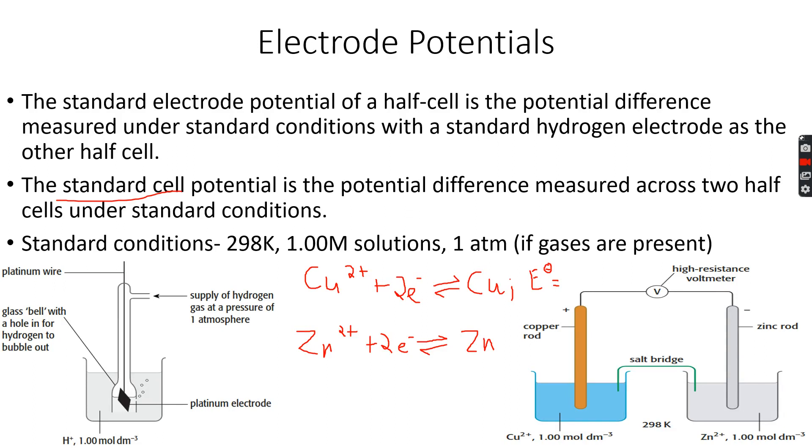The E0 value for the copper half equation is plus 0.34 volts. The sign is very significant and I'll be explaining the significance of the sign, but it is plus 0.34.